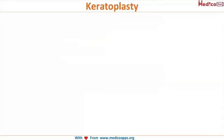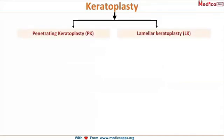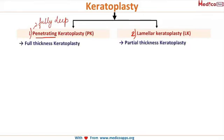Let's quickly look at the two different types of keratoplasty. The first one is penetrating keratoplasty and the second one is lamellar keratoplasty. Penetrating — you can think that it is going fully deep, completely penetrating. So this implies it is a full thickness keratoplasty: the entire thickness of the cornea is removed from the donor and placed onto the recipient's eye.